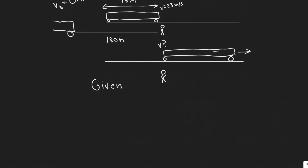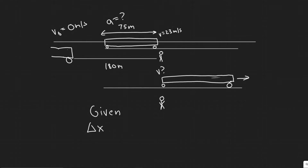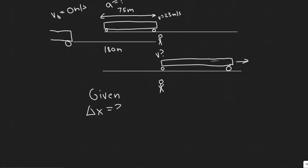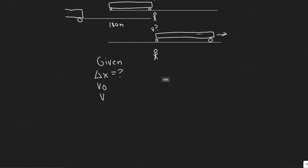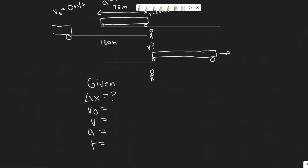The five main kinematic variables are delta x — referring to the change in position, or distance traveled — initial velocity, final velocity, acceleration, and time. Let's determine which ones we have for this interval.